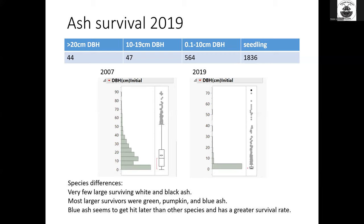We do see some species differences. There were very few large surviving white ash and black ash trees — about six of each surviving over the 10-centimeter threshold. Most of those larger survivors were green ash, pumpkin ash, and blue ash. Blue ash especially seems to be doing something different. When we have mixed stands of blue ash with white ash or green ash, the white or green ash will get nearly completely killed first, and then the blue ash starts getting picked off — but it does seem to have a greater survival rate than the other species.